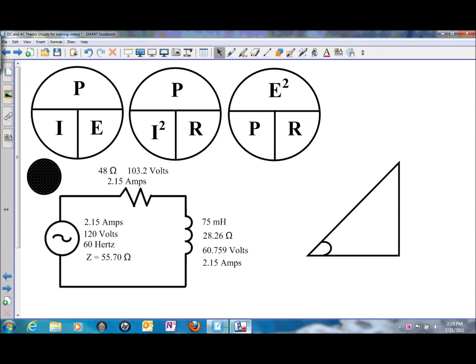In this presentation we will be looking at solving power in a series RL circuit. At this point we have solved everything for the individual components, including the individual voltage drops on both the resistor and the inductor, current through both of those components, and the totals.